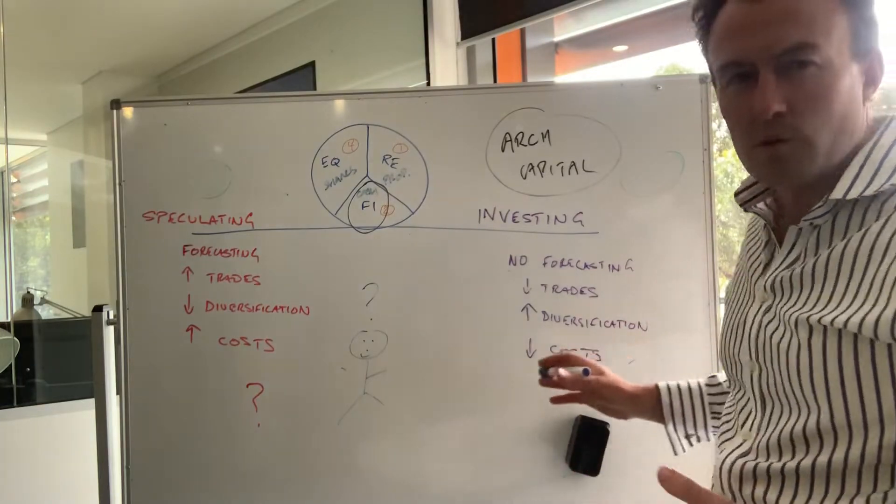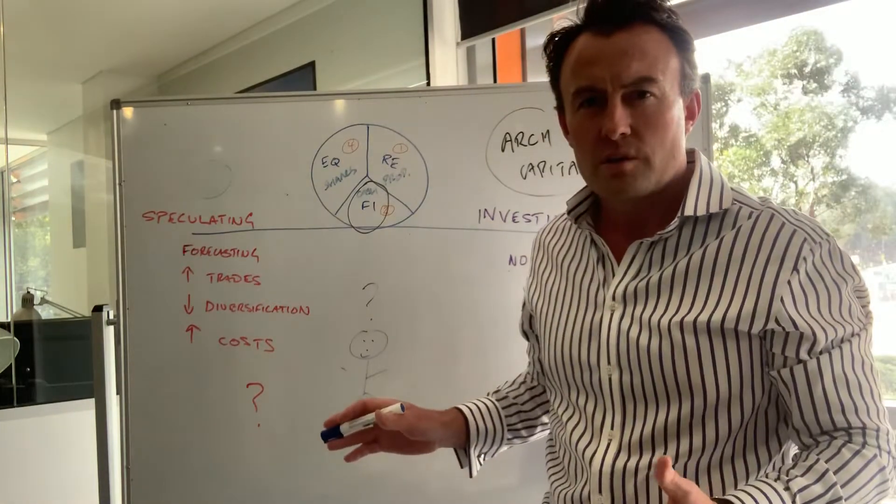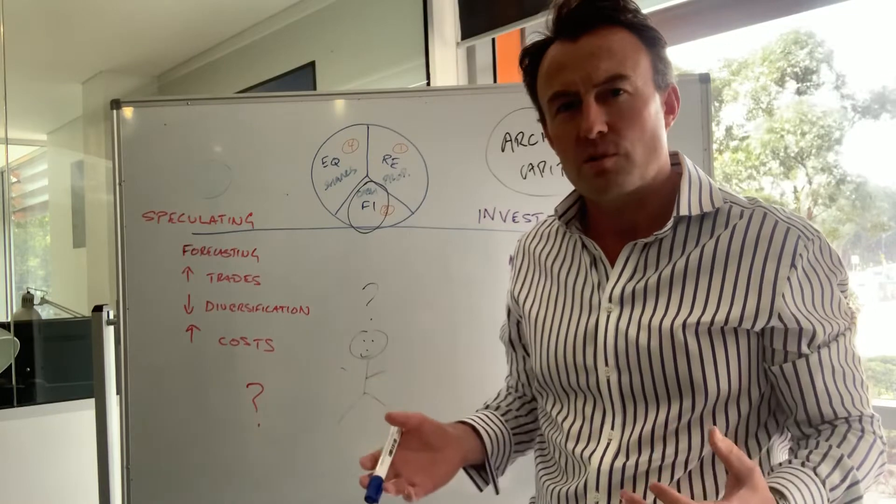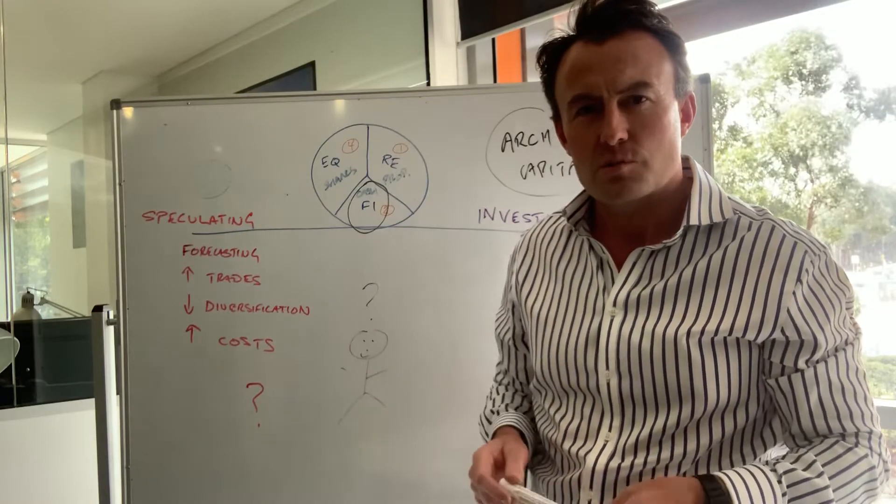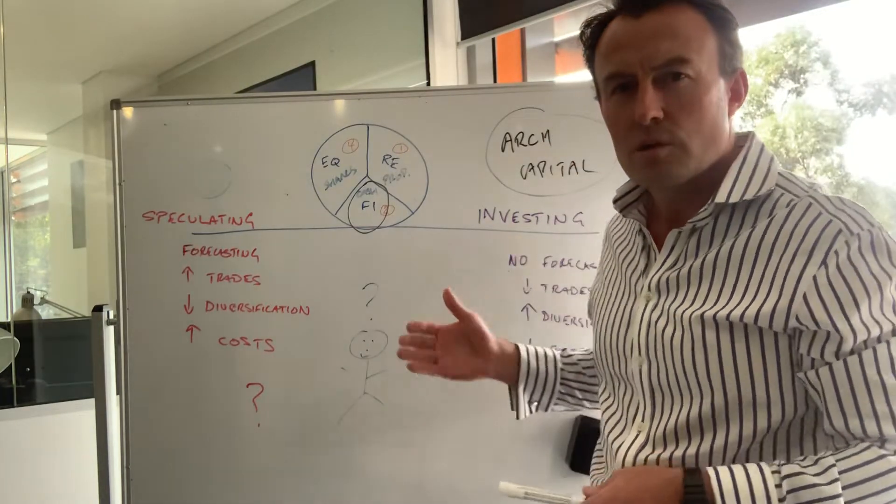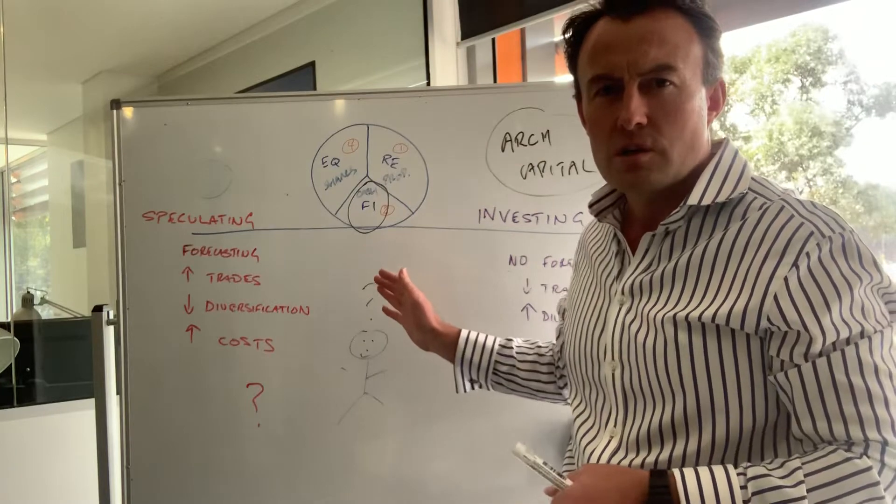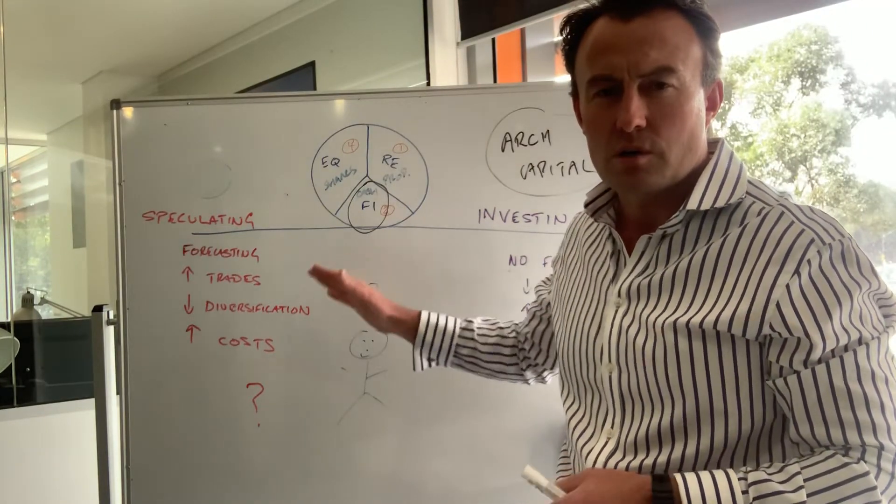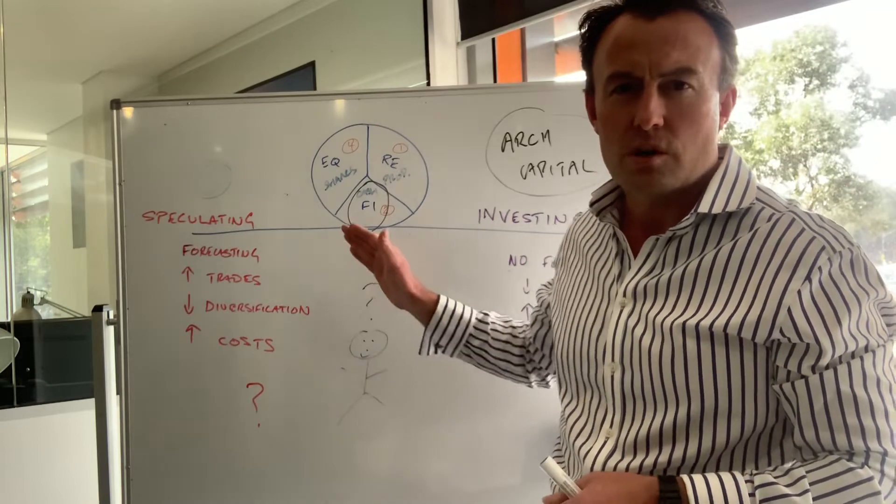Where we want to invest, we want to understand where returns come from. They come from the asset classes we're in and we want to capture those asset classes as efficiently as possible. If we want to reduce risk, we take more money into cash and fixed interest and bonds. If we want lower risk, lower risk bonds versus high risk bonds.